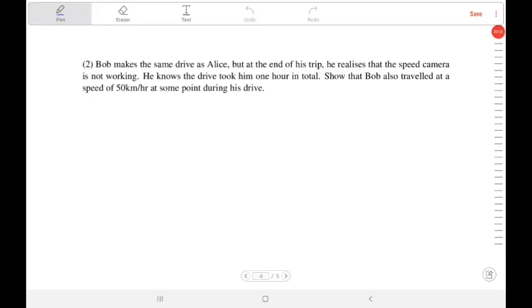In the second part, Bob is making the same drive as Alice, so we know it's still 50 kilometers. He determines that the speed camera isn't working, so he doesn't actually know what speed he was traveling at the end. But he does know that the drive took him one hour. In this case, we don't actually have information about speed. The variables that we have are distance and time.